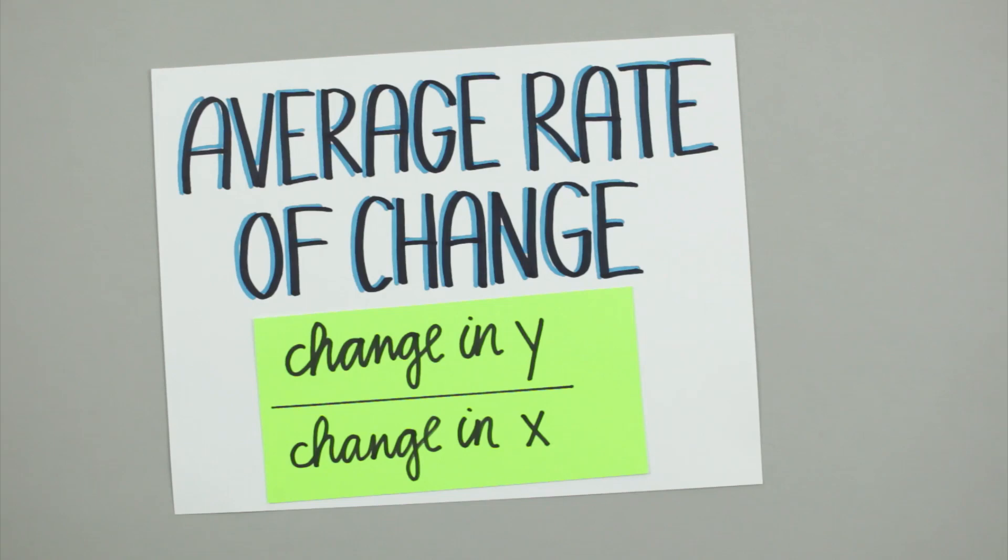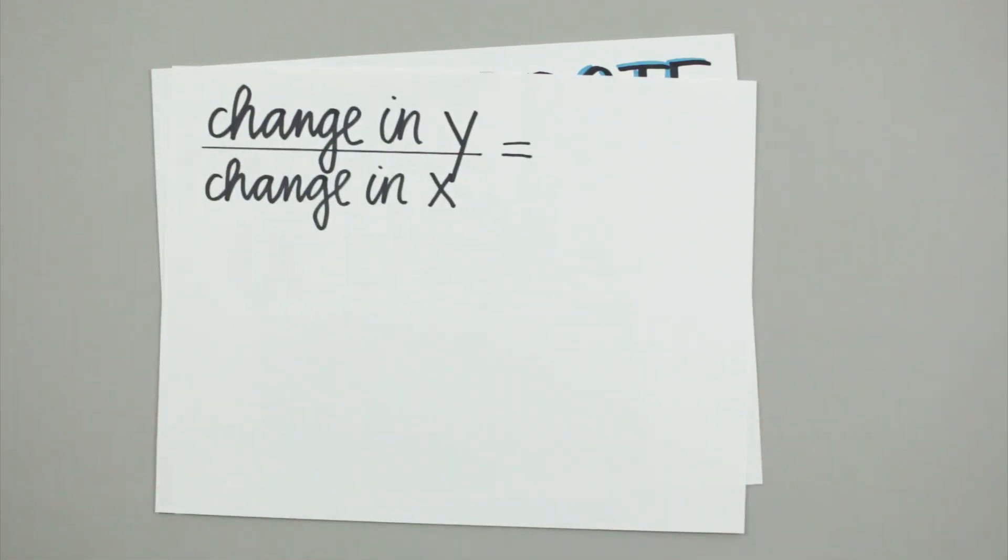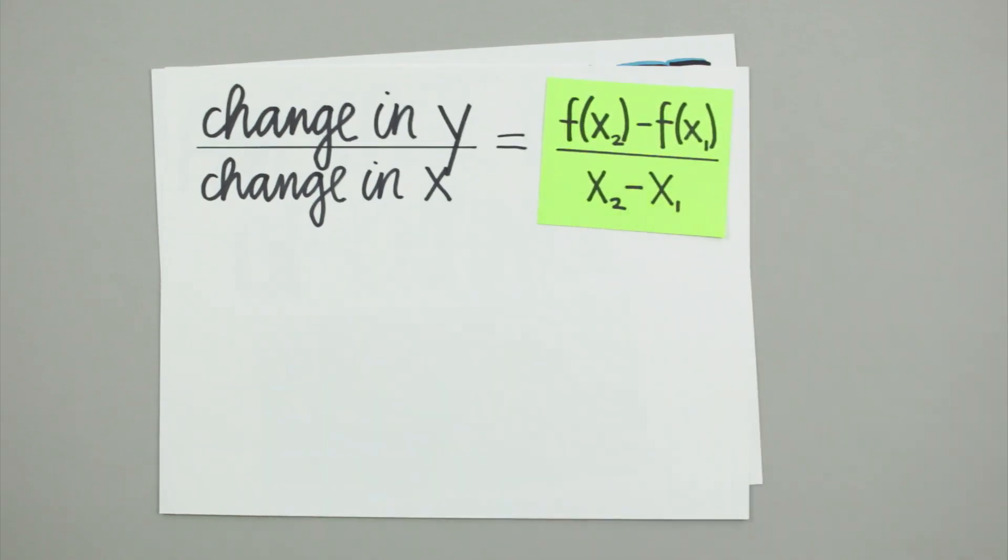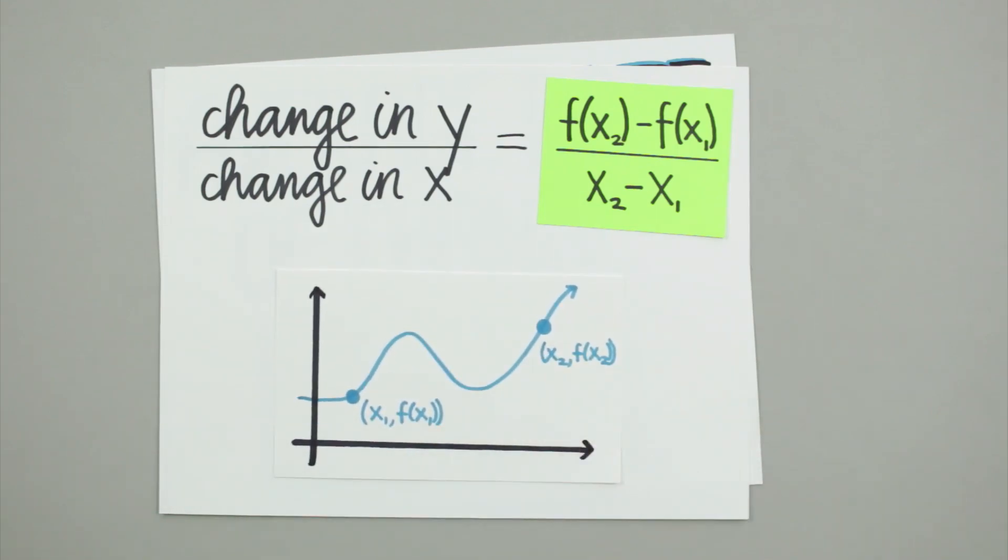And this brings us to the formula for the average rate of change between two points on a function. The average rate of change of a function is given by f(x₂) minus f(x₁) over x₂ minus x₁, where x₁, f(x₁) is the starting point of the interval we're interested in, and x₂, f(x₂) is the endpoint.